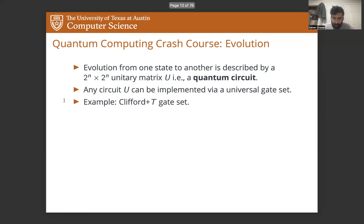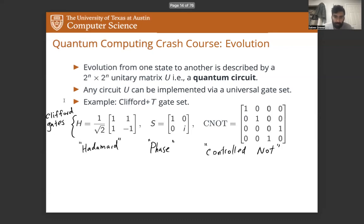The example of a universal gate set is the Clifford plus T gate set. This gate set is going to be relevant for this entire talk. The Clifford part of the gate set is made up of these three gates. These are the Hadamard, the phase gate, and the controlled not gate or the CNOT gate. The Hadamard and phase are single qubit gates.